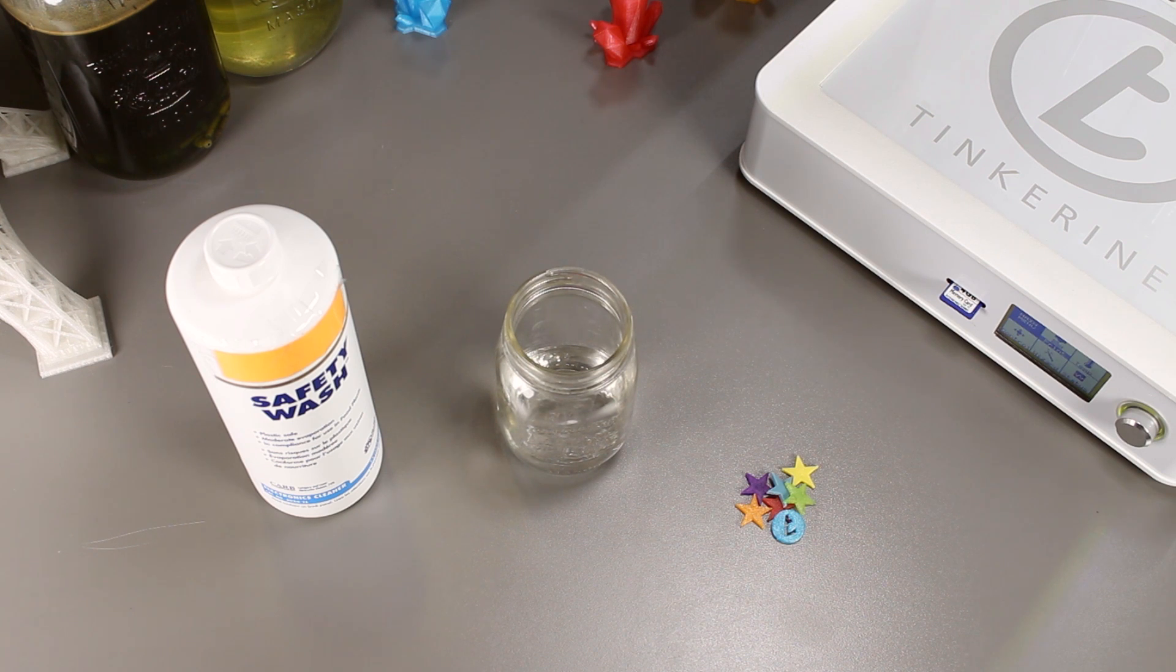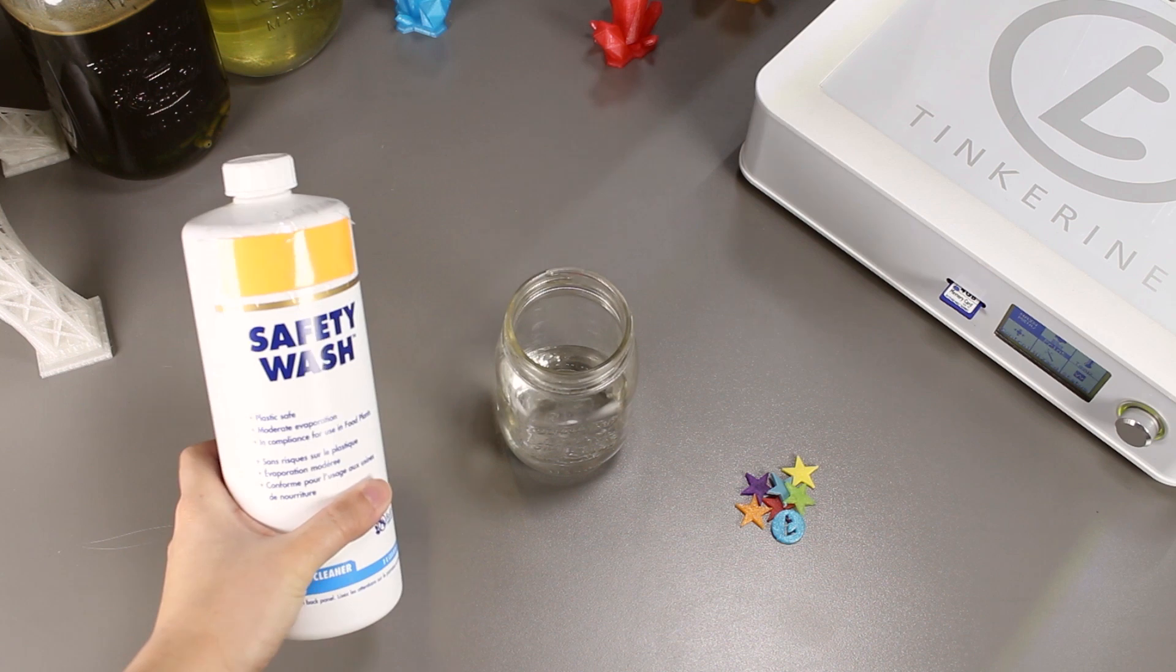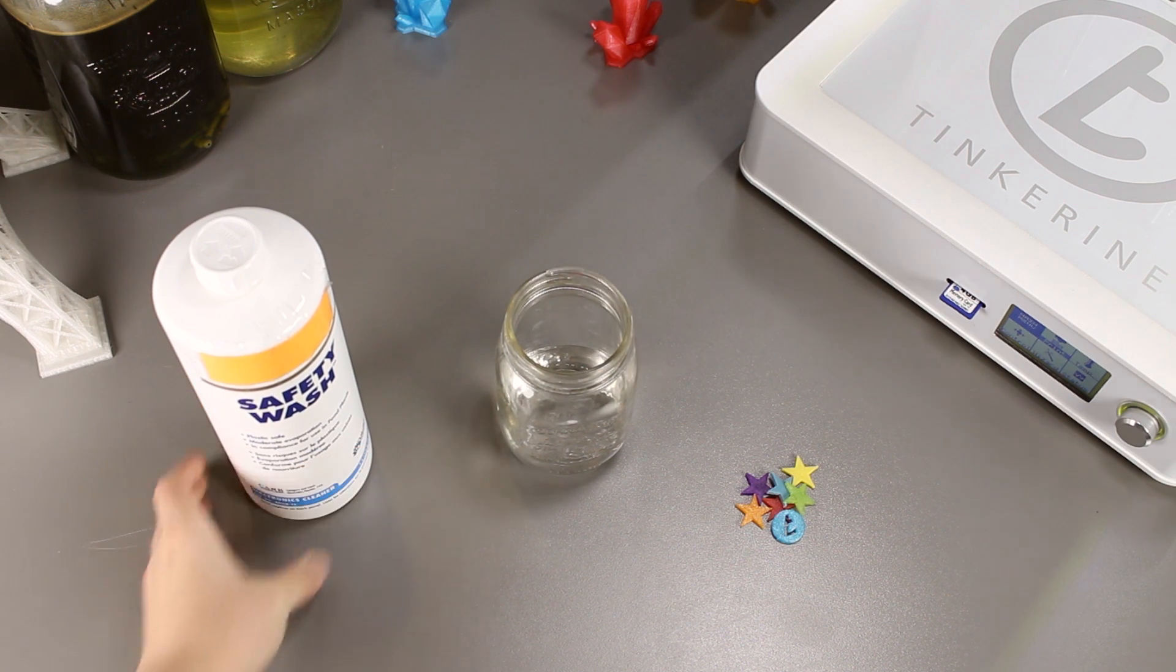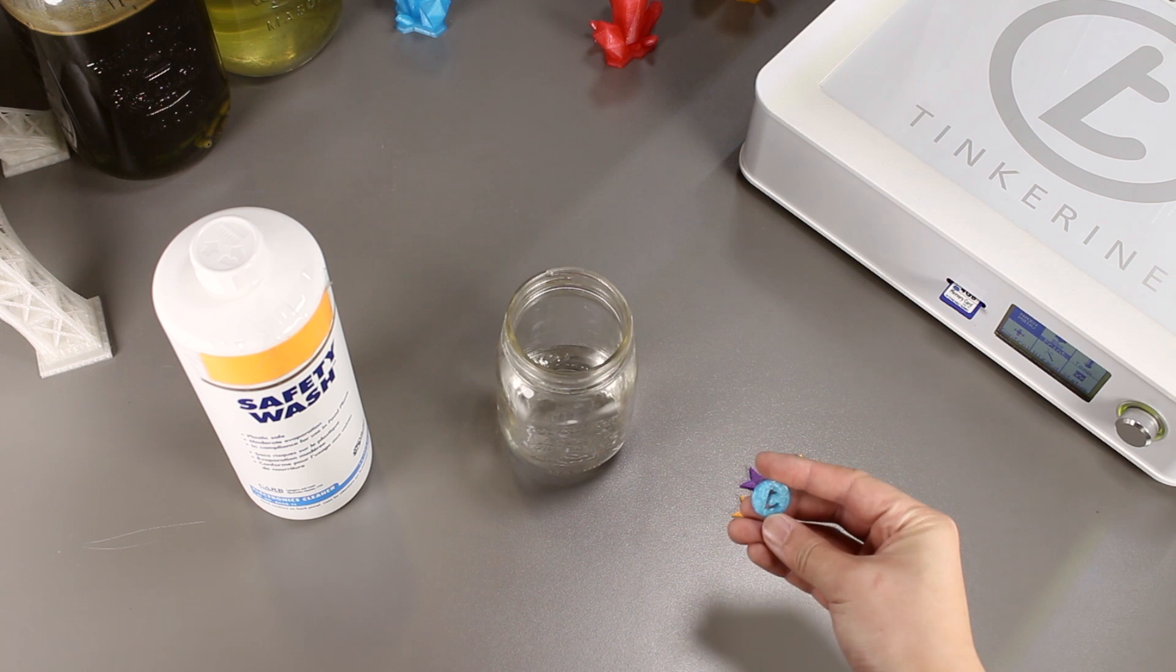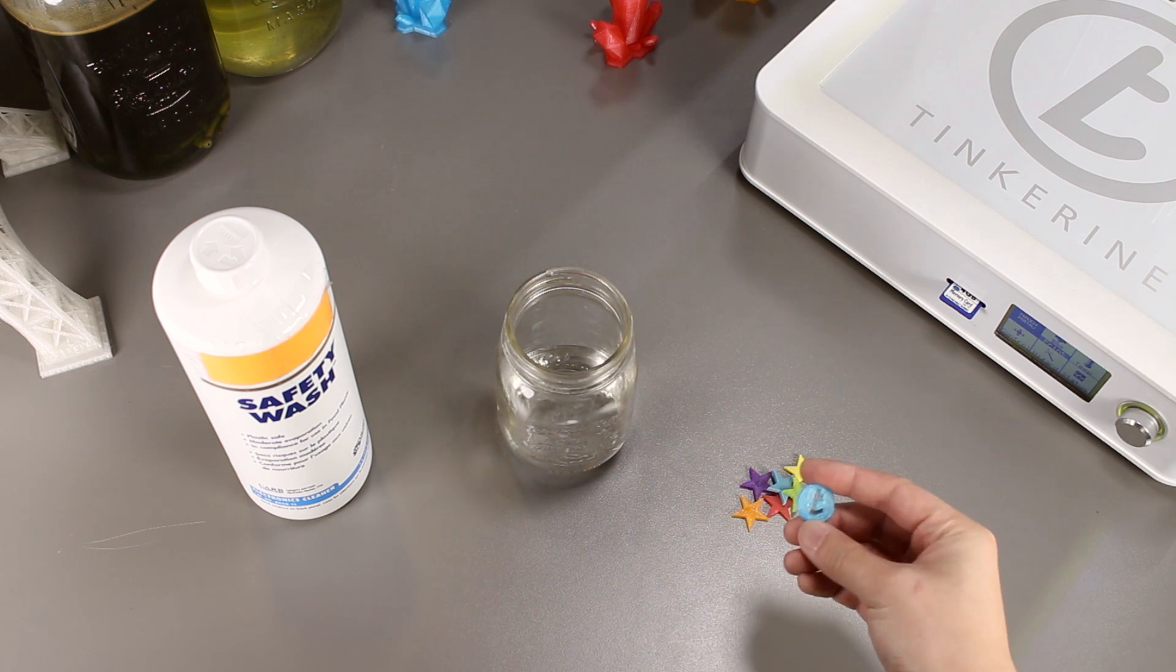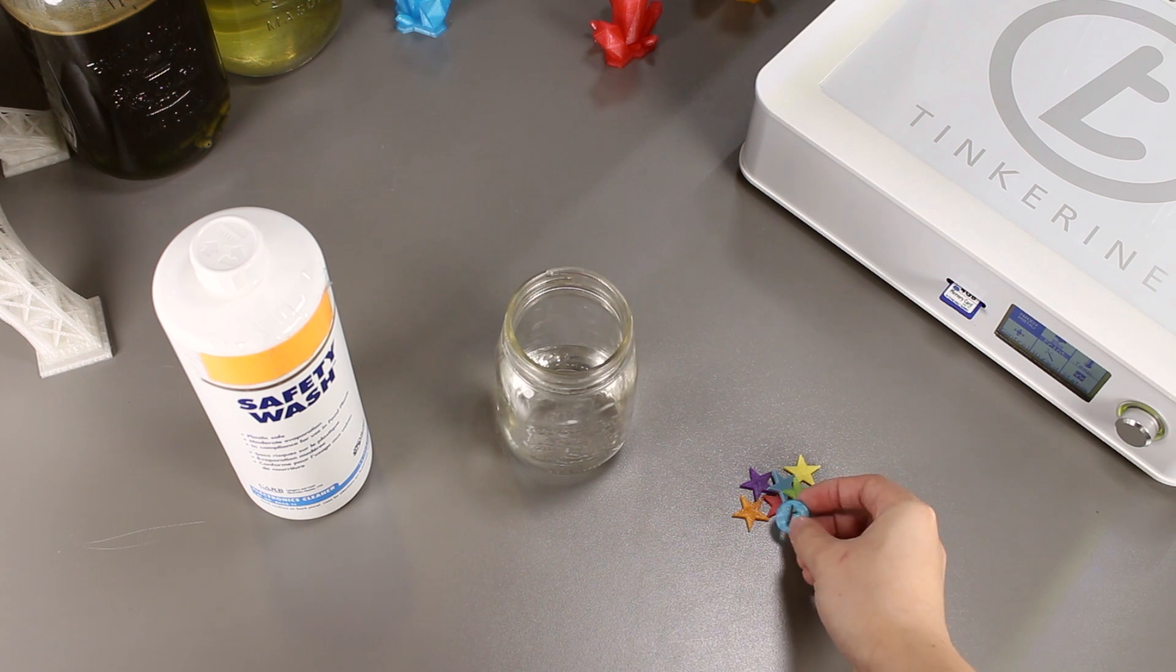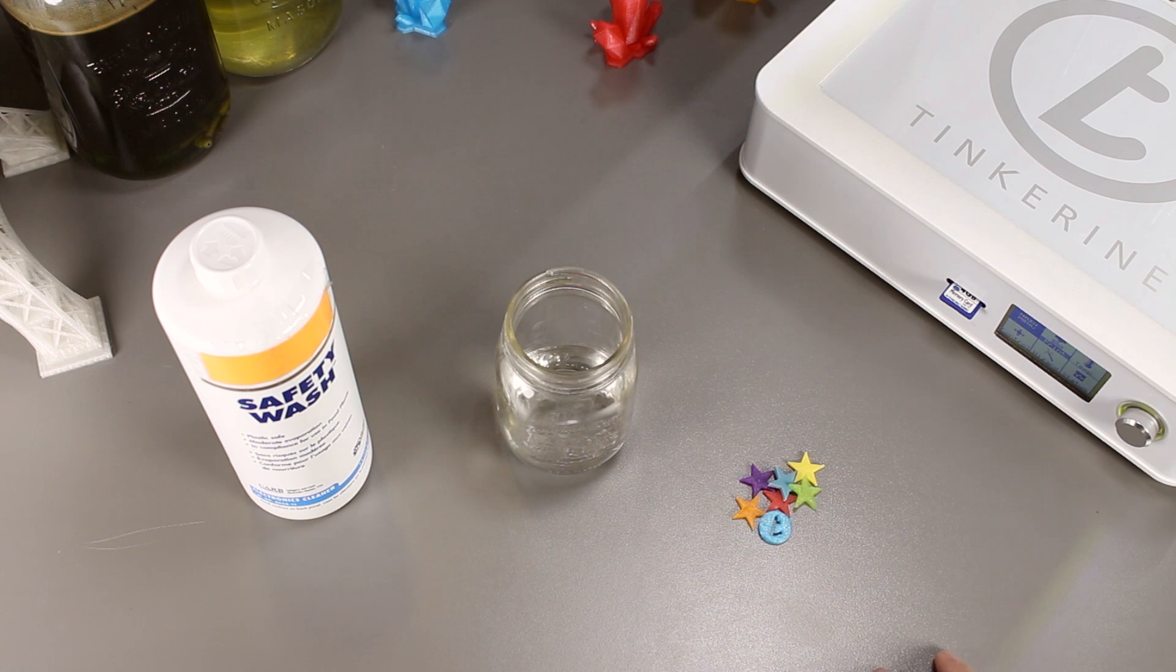Well, there we have it. We tried smoothing out PLA with this bottle of ethyl acetate and isopropyl alcohol, and it doesn't work at all. It may be due to the fact that the ratio of ethyl acetate is a lot less than the isopropyl alcohol, which is why nothing happened. I guess we just have to continue to find a way to smooth out our PLA prints.